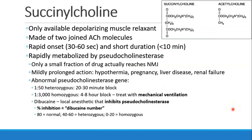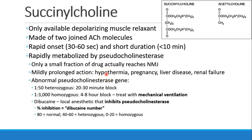Let's talk about succinylcholine. As you can see, it's basically two acetylcholine molecules joined together, so it binds at the acetylcholine receptor as an agonist. It's the only available depolarizing muscle relaxant. It has a rapid onset of 30 to 60 seconds and a short duration of action, usually less than 10 minutes. It's rapidly metabolized by pseudocholinesterase in the plasma, so there's a large first-pass effect when injected into the venous system, and only a small fraction of drug ever reaches the neuromuscular junction.